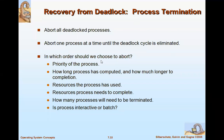Now, how do we pick which process to abort? We have some methods for determining the order. First is the priority of the process — if the process has high priority, keep it as is; otherwise, pick it for elimination. Second is how long the process has computed and how much longer it needs to complete.